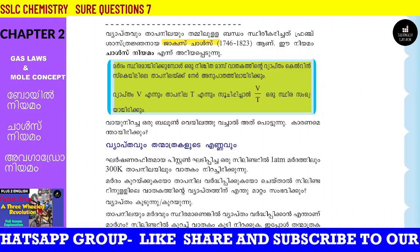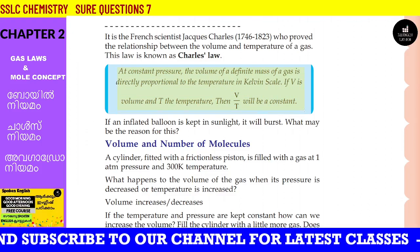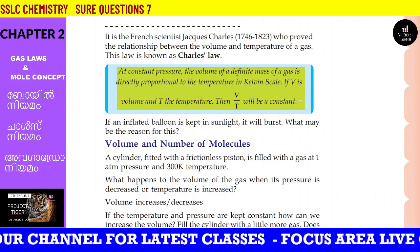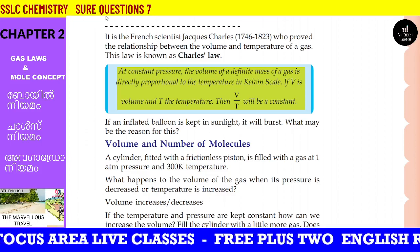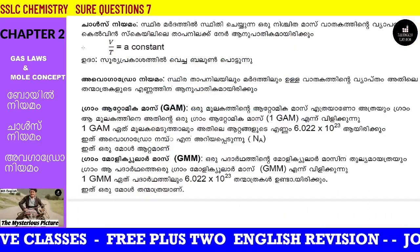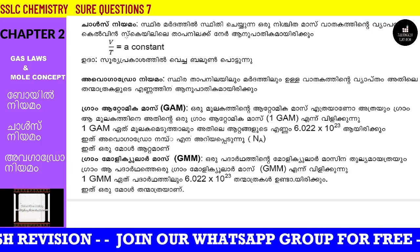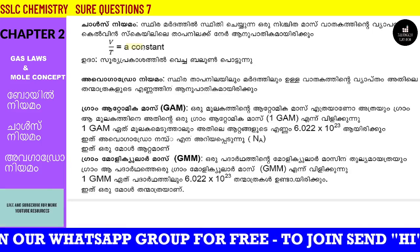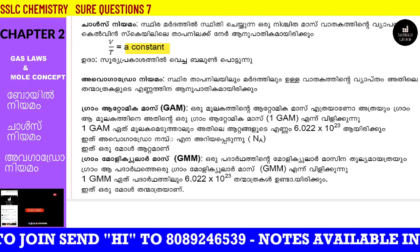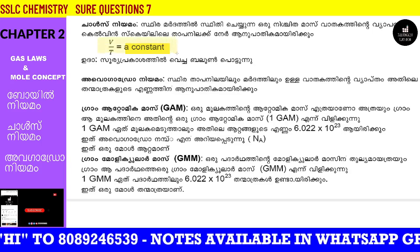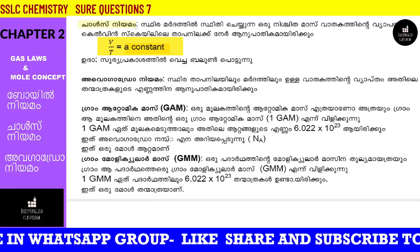At constant pressure, the volume of a definite mass of gas is directly proportional to its temperature in the Kelvin scale. Volume V is proportional to temperature T. Therefore V by T is a constant. When the temperature is T1, the volume is V1; when the temperature is T2, the volume is V2. According to Charles's Law: V1 by T1 is equal to V2 by T2.